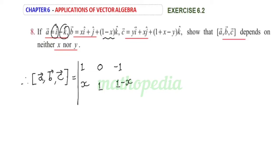Next, C vector: coefficient of i is Y, then j is X, then coefficient of k is 1 plus X minus Y.